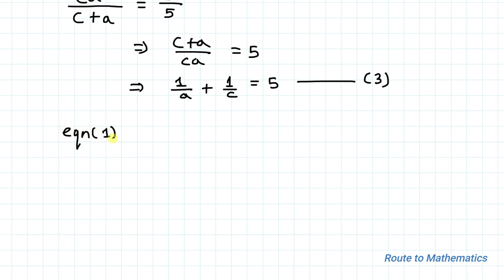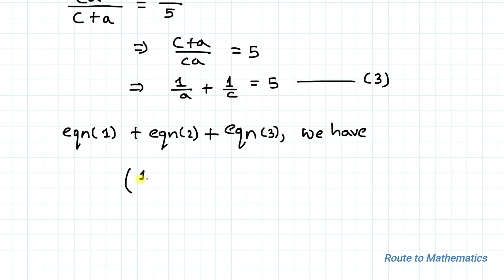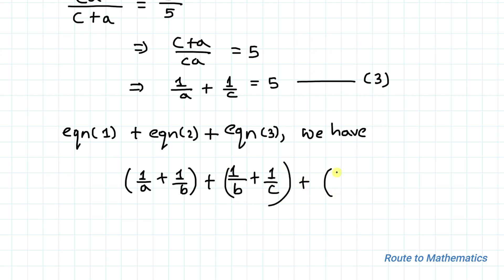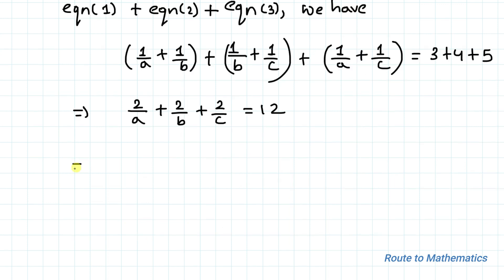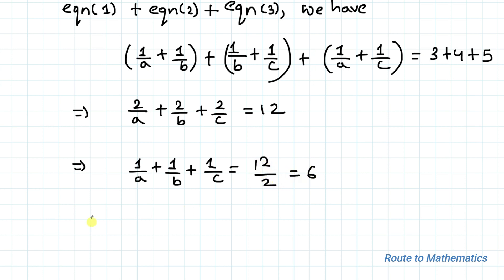Now, adding equation 1, equation 2, and equation 3, we have (1/a + 1/b) + (1/b + 1/c) + (1/a + 1/c) equals 3 plus 4 plus 5. This simplifies to 2/a plus 2/b plus 2/c equals 12. Taking 2 as common, we get 1/a plus 1/b plus 1/c equals 12 divided by 2, which equals 6.